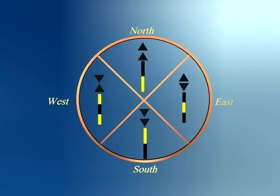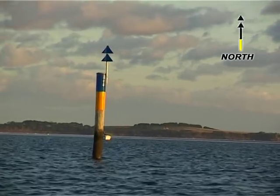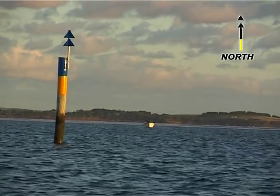All four cardinal marks comprise two black cones mounted on a black and yellow buoy or pile. North cardinal marks indicate that the safe water is north of the mark. The two black cones point up. The black band is above the yellow band.